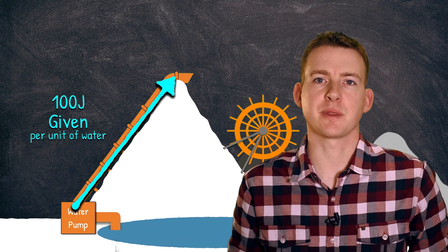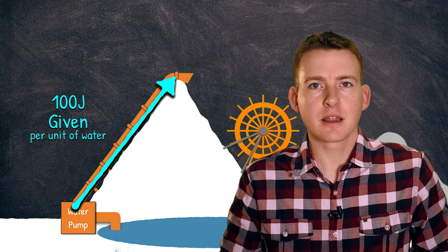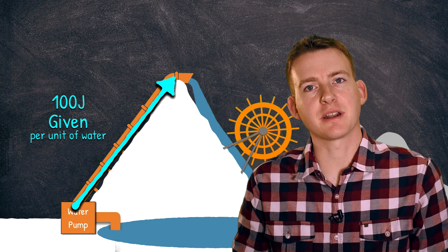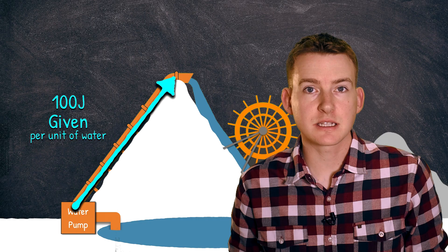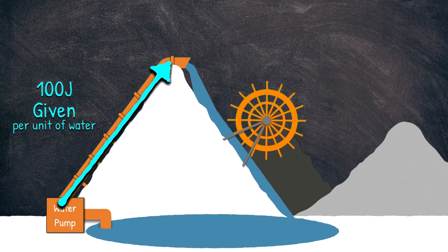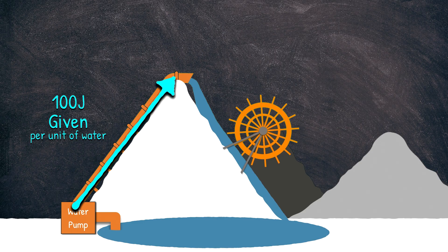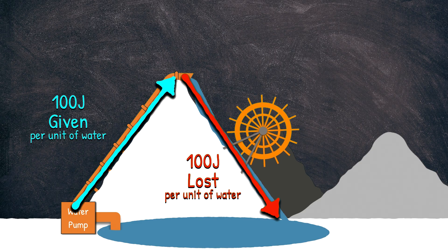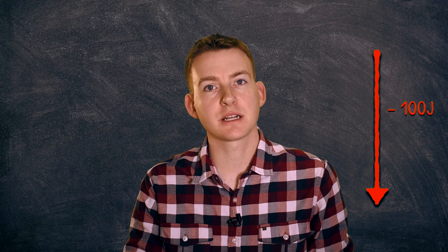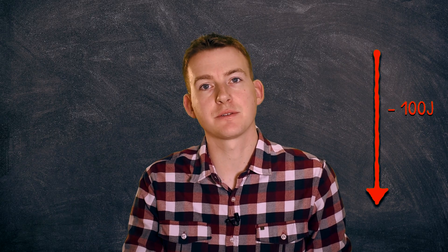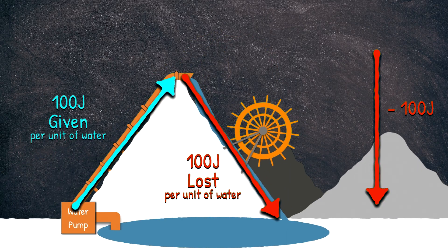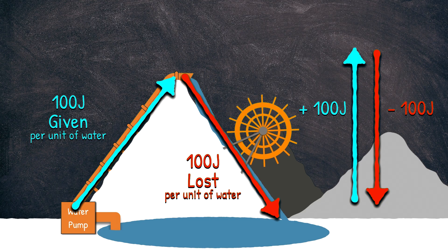Imagine that it takes 100 joules of energy to move a certain amount of water from the bottom of the hill to the top. This water then continues flowing and eventually falls down the waterfall, providing energy for the water wheel to spin. From the top of the waterfall to the bottom, the water has lost 100 joules of energy. The difference in energy per unit of water from one side of the water wheel to the other is 100 joules — and the same applies from the bottom of the hill to the top.